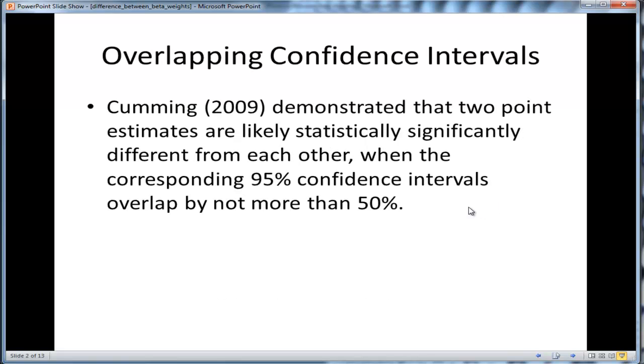And the reason why bootstrapping is useful in this context is that Cumming in a paper of 2009, in fact there are several papers that looked at this issue, demonstrated that two point estimates are likely statistically significantly different from each other when the corresponding 95% confidence intervals overlap by not more than 50%.